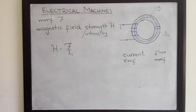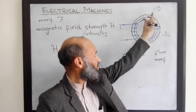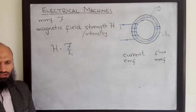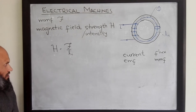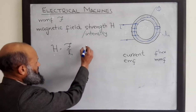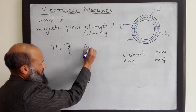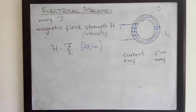If that is not the case — that is, if the cross-sectional area is not uniform or the material used in the magnetic circuit is not the same — then we have a more complex expression. However, for this course, we shall not need that complex expression. The units for magnetic field strength can be easily identified: units for MMF is ampere turns and for length is meter, so units of H are ampere turns per meter.